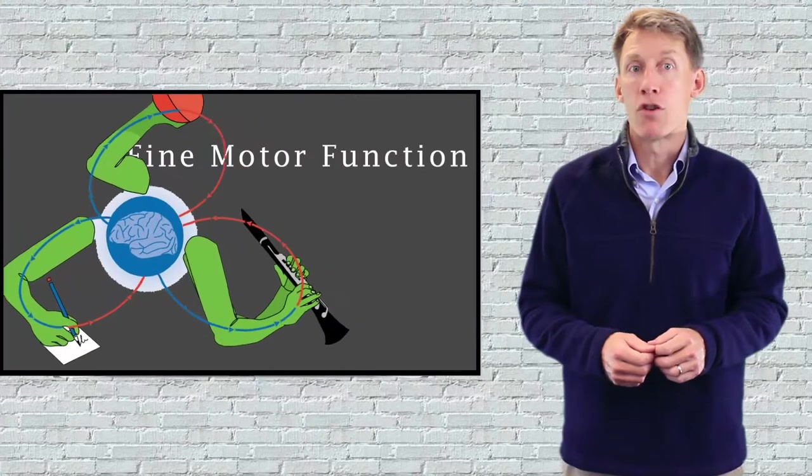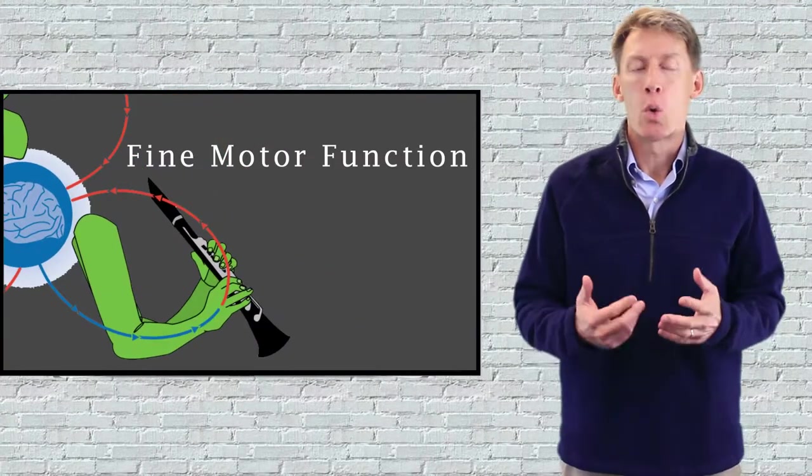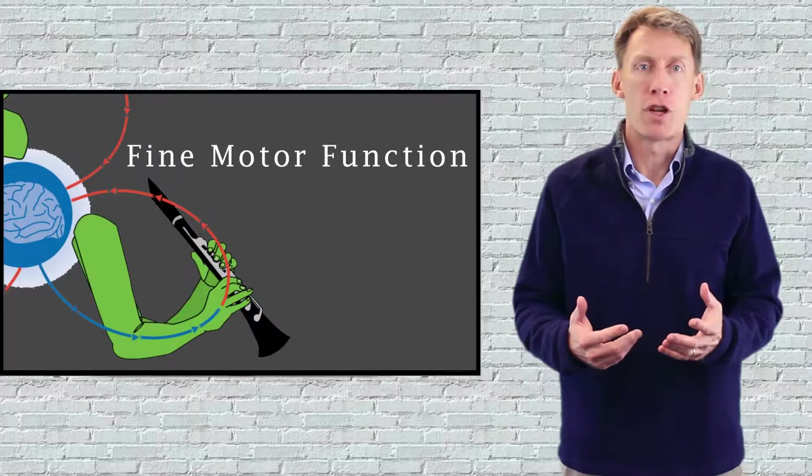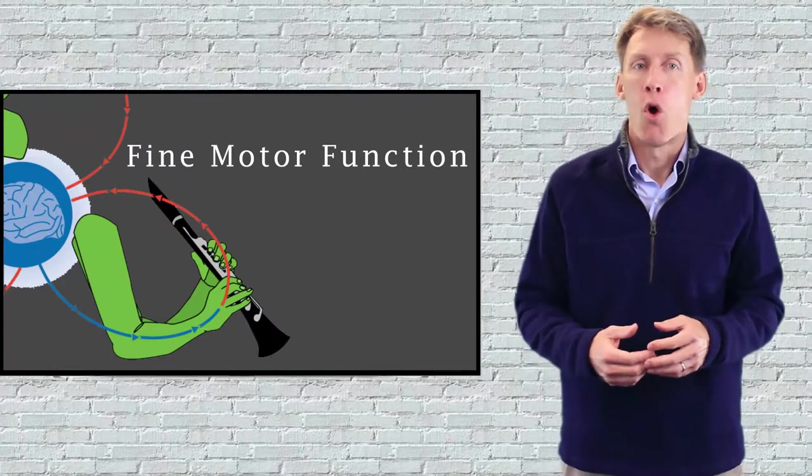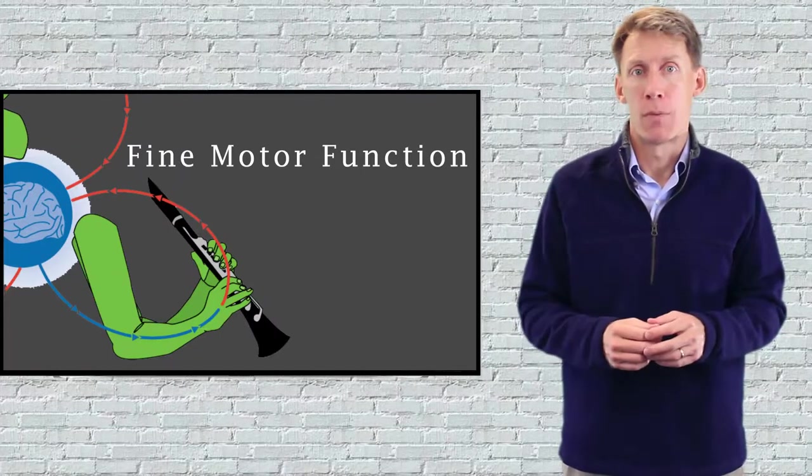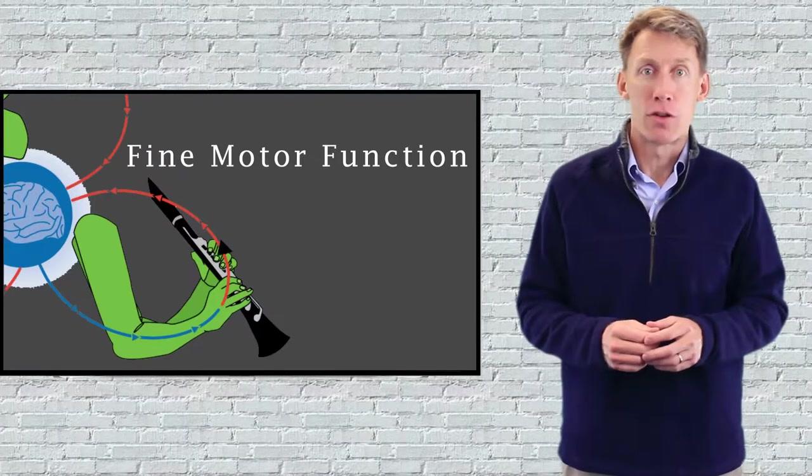Smooth coordination of fine motor function, including for typing, requires being aware of finger positioning without visual information or feeling where your fingers are when looking elsewhere. That's where those bi-directional signals come in.